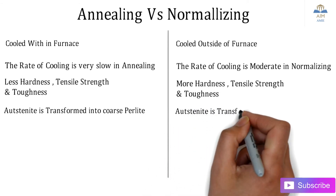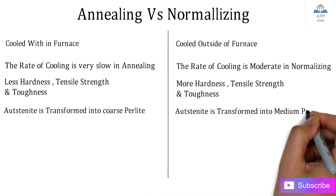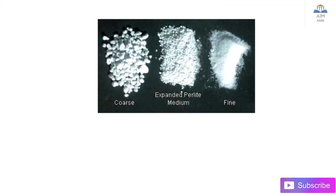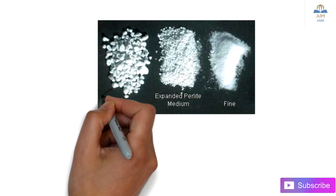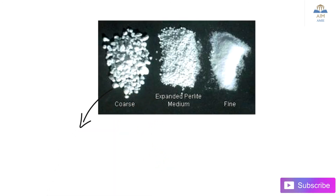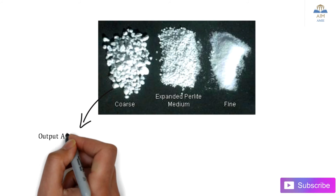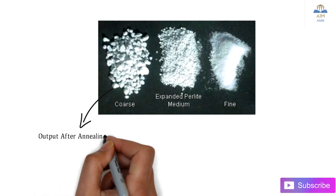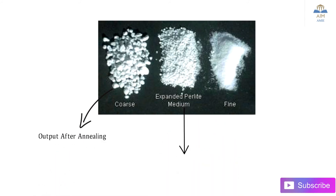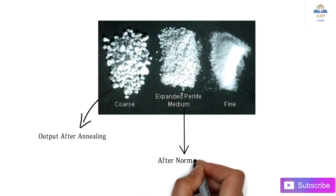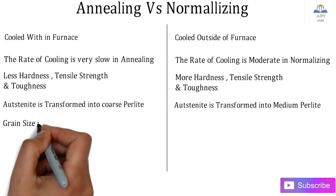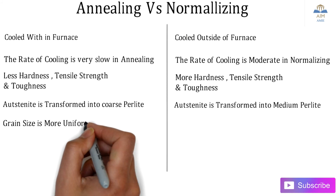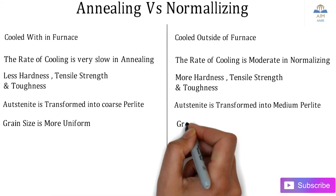In annealing, austenite is transformed into coarse pearlite, whereas in normalizing, austenite is transformed into medium pearlite. Three categories are shown: coarse, medium, and fine. Coarse pearlite is the output after annealing, and medium pearlite is the output after normalizing.